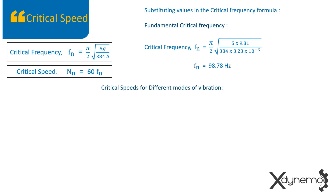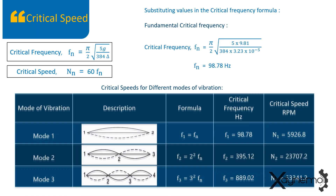Let us find out critical speeds for different modes of vibration. In this analysis, three modes of vibrations are considered. Observe the shapes of the vibrating shaft in different modes. The mode 1 critical frequency is the fundamental frequency. Mode 2 critical frequency is 4 times the fundamental frequency, whereas the mode 3 critical frequency is 9 times the fundamental frequency. The values of critical frequencies and critical speeds for different modes of vibration are shown in this table.